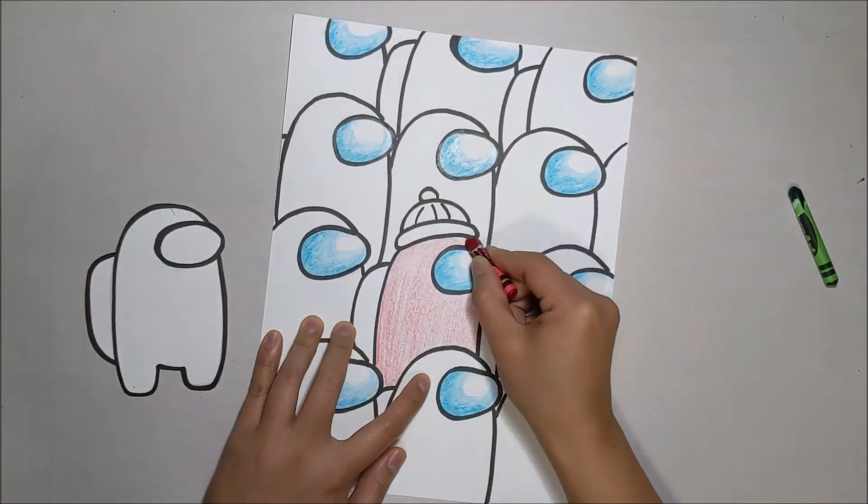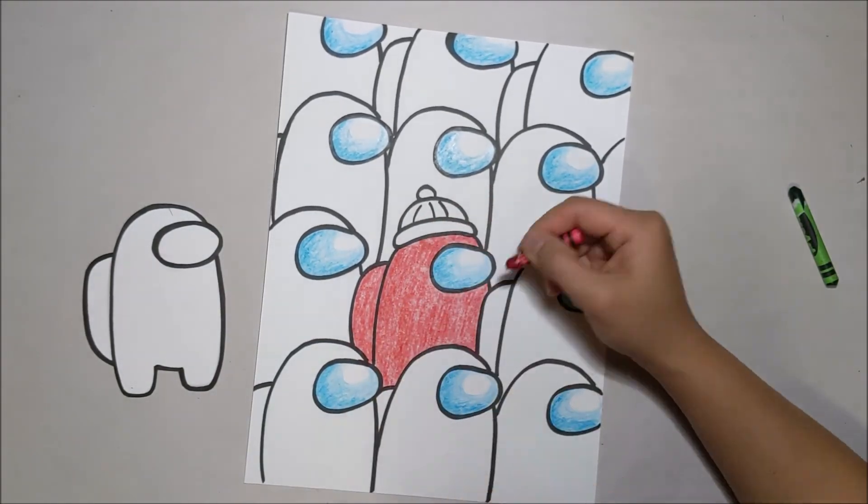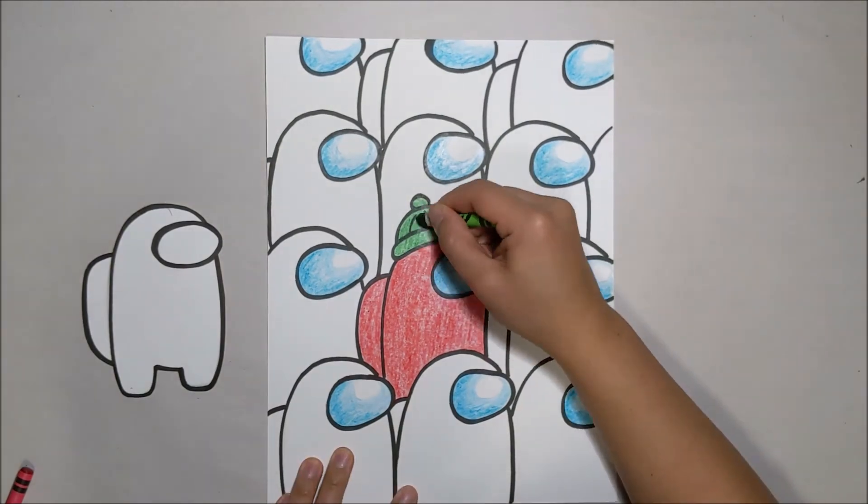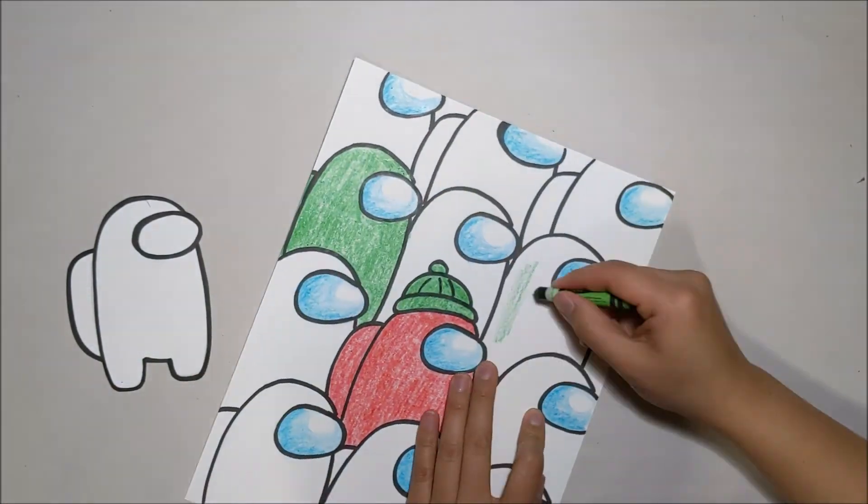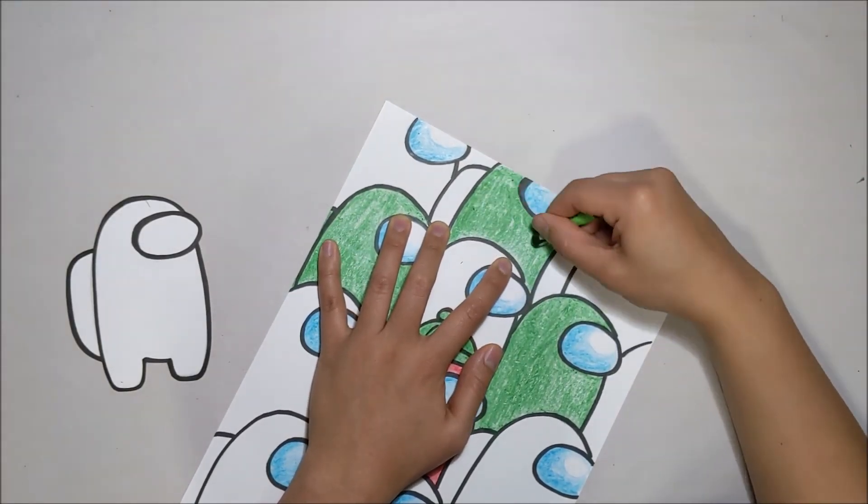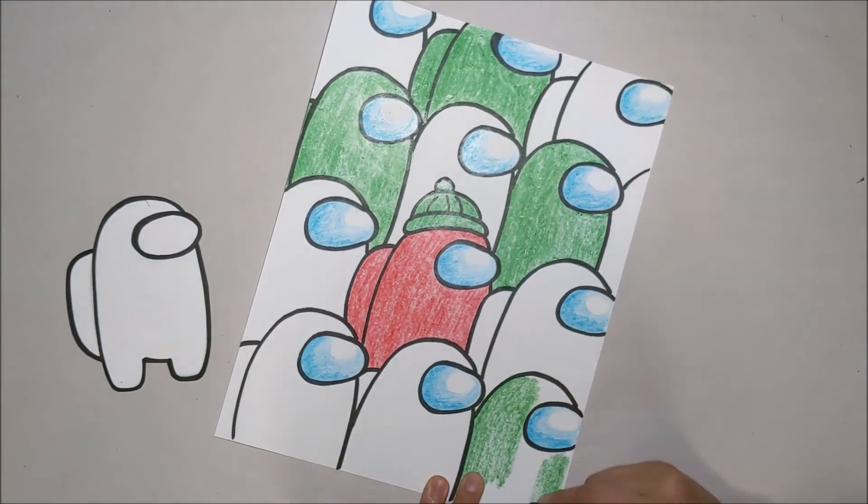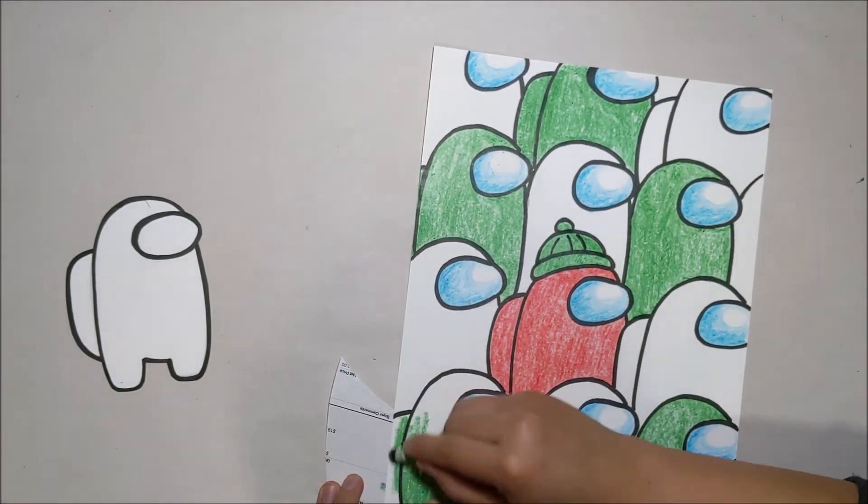Now for the final coloring pieces you want to color in all of the crew members. I have decided to create a holiday theme so I am doing red and green and white but you can do any color that you want for any of these. You can mix and match, make it super colorful or you want to do all the same. Maybe the imposter is the one that is different. You decide and make it unique.